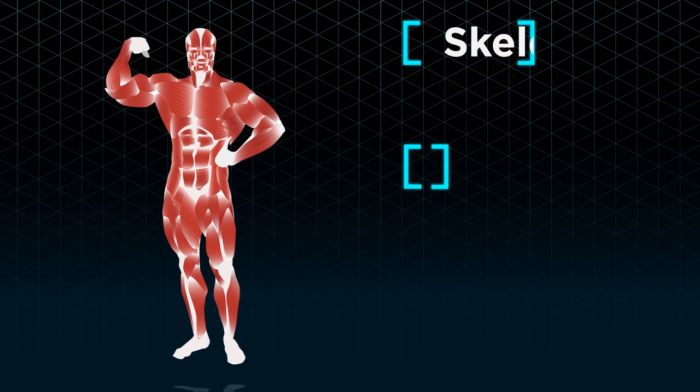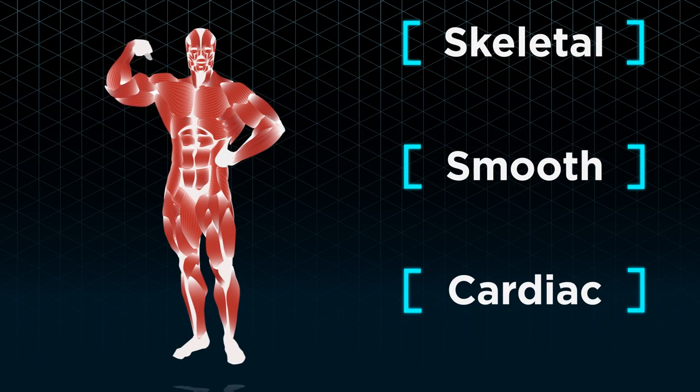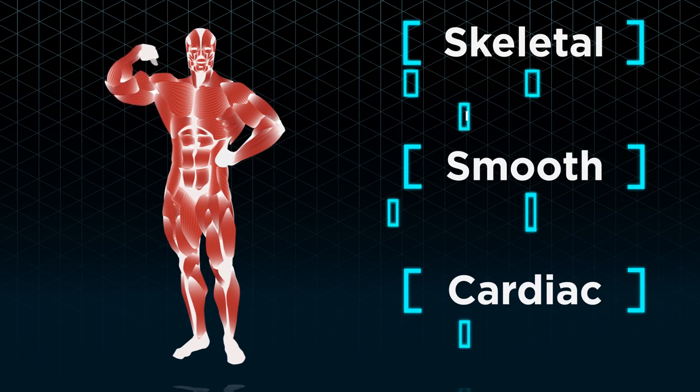In conclusion, there are three types of muscles found in our body, all of which have specific structures and functions.